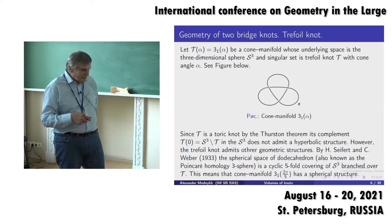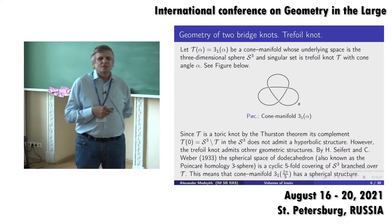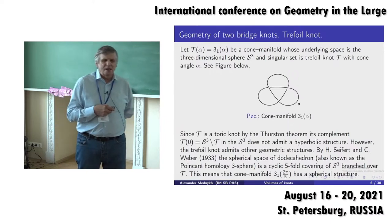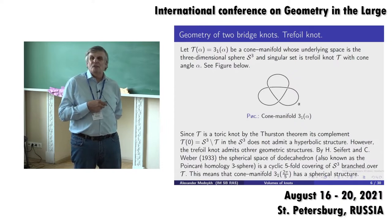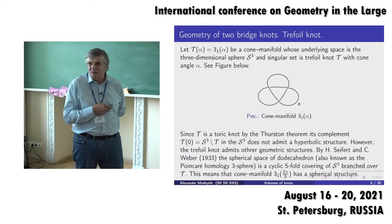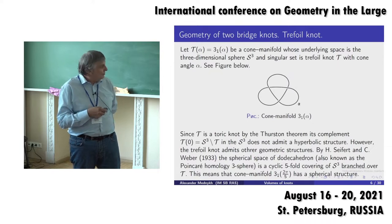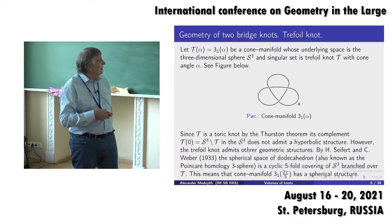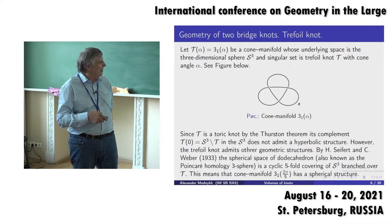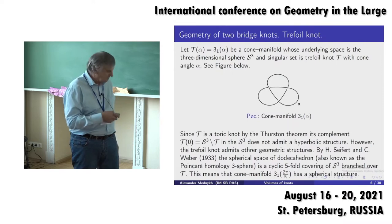The Poincaré homology sphere is a very interesting object in geometry, because the original statement of the famous Poincaré conjecture was: suppose the first homology of a manifold is zero — is it a sphere? Of course this is not true, and Poincaré himself constructed a counterexample. This is exactly that example, described in slightly different terms.